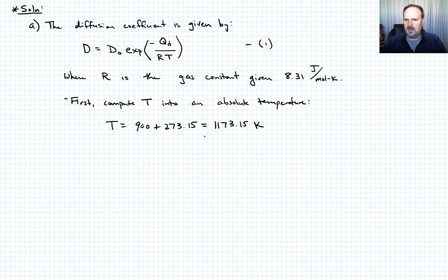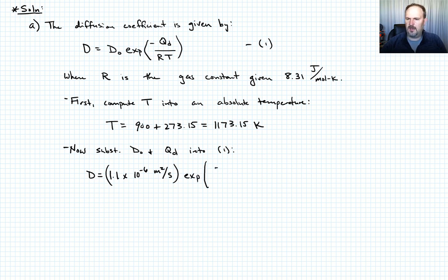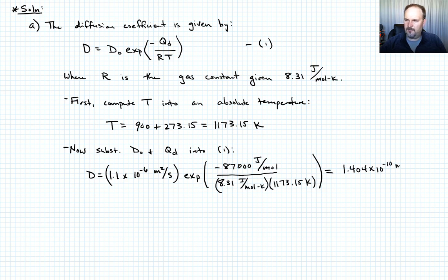Now we substitute the given values of Q_D and D-naught into equation 1. D equals 1.1 times 10 to the negative 6 meters squared per second, times e to the negative 87,000 joules per mole divided by 8.31 joules per mole per Kelvin times 1173.15 Kelvin. This gives D equal to 1.404 times 10 to the minus 10 meters squared per second. That's the answer to part A.